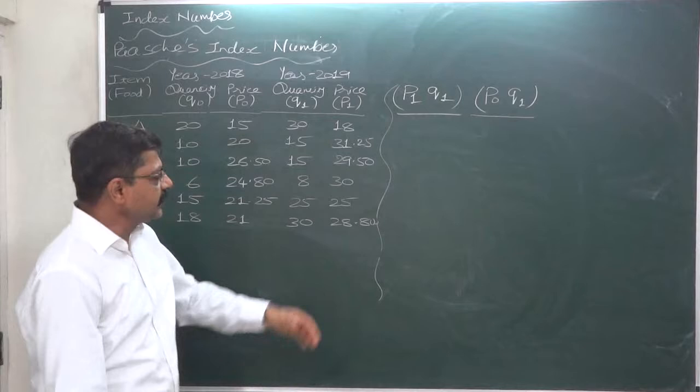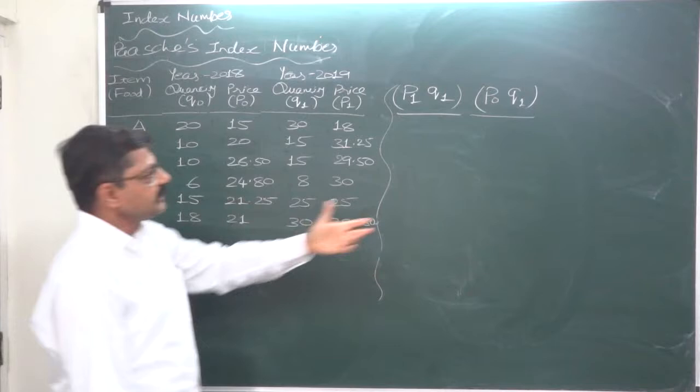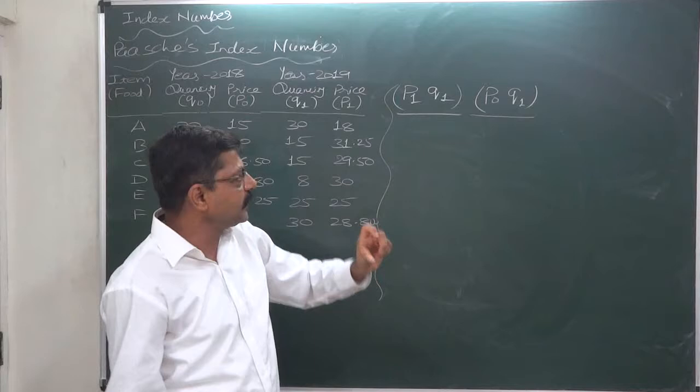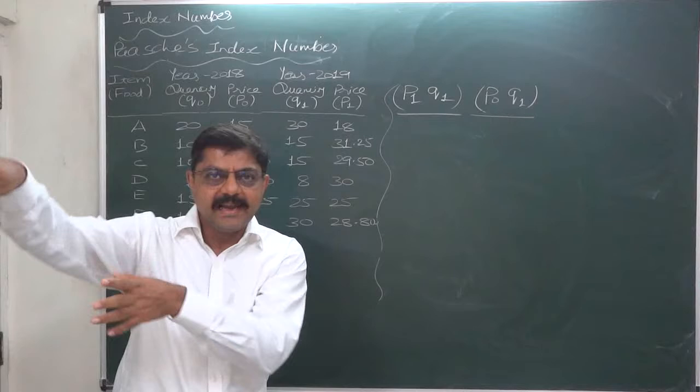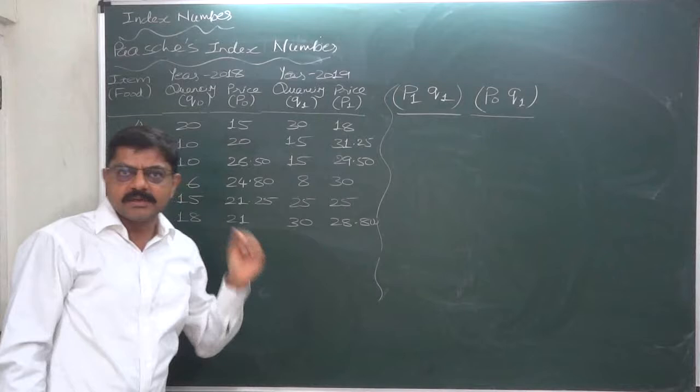And this is something like notional cost, P0Q1. What if we purchase the quantity of current year at the base year price? This can never be a reality because current year's quantity can never be purchased at base year price - base year has already lapsed. But this is notional cost we need to calculate to find out the index number suggested by Paasche. So let's first find out P1Q1.